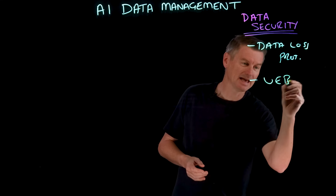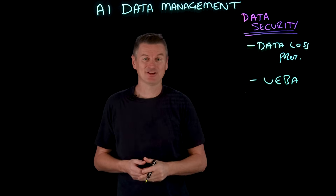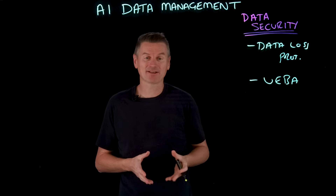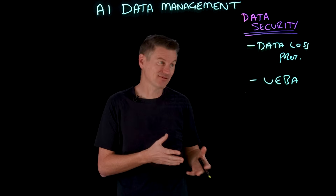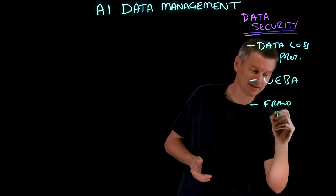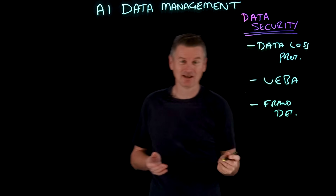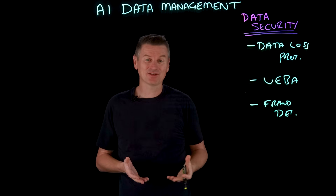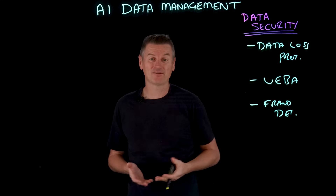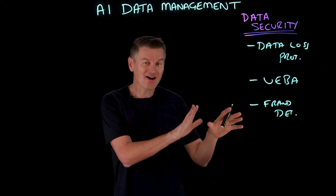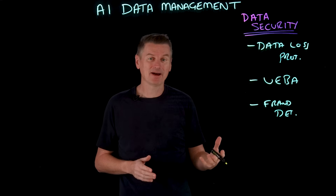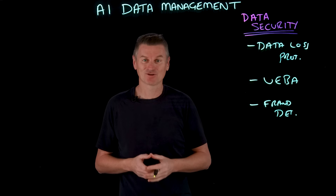Another approach is UEBA — User and Entity Behavior Analytics — which employs AI to monitor how users typically access data and then flag deviations. And then there's fraud detection: algorithms that can analyze transaction data in real time to spot fraudulent patterns that a set of predefined rules might not catch. In essence, AI complements traditional rules-based security measures by adding a layer of smart surveillance and adaptive control.